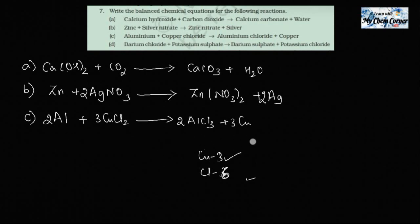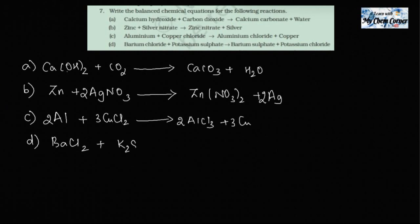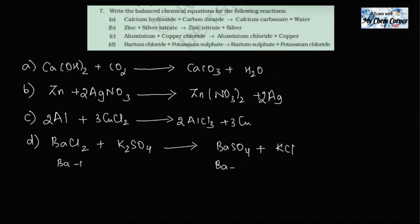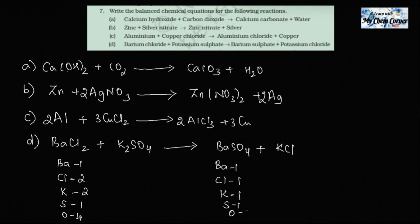Now the fourth equation: barium chloride — BaCl₂ — plus potassium sulfate — K₂SO₄ (because SO₄ is minus 2 and K is plus 1, so it becomes K₂SO₄) — giving barium sulfate plus potassium chloride. Atom count: Ba is 1 each side, Cl is 2 left and 1 right, K is 2 left and 1 right, S is 1 each side, O is 4 each side.